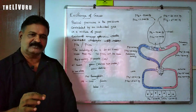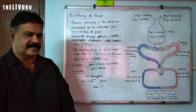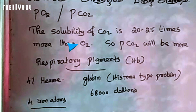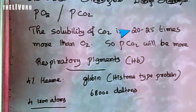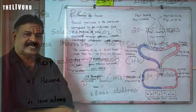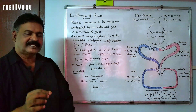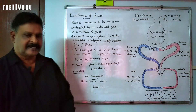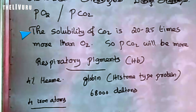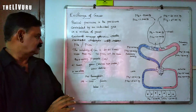The solubility of carbon dioxide is 20 to 25 times more than oxygen. Oxygen has less solubility in plasma, but carbon dioxide is soluble in water at a high rate — 20 to 25 times more than oxygen. So the partial pressure of carbon dioxide will always be more in the blood or tissues.